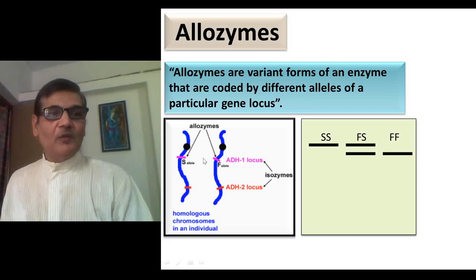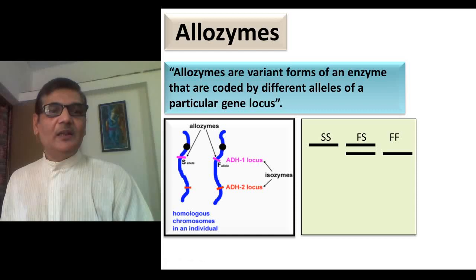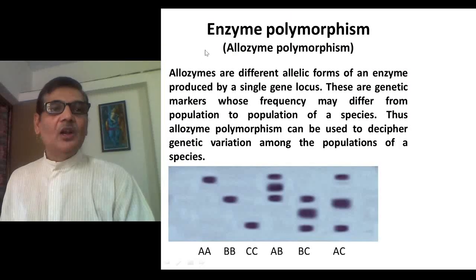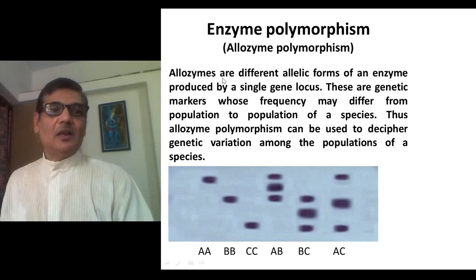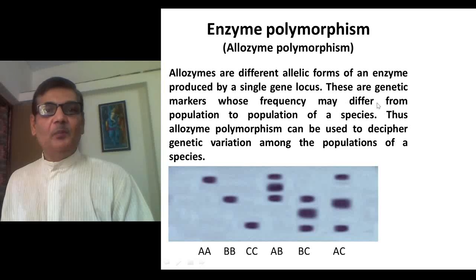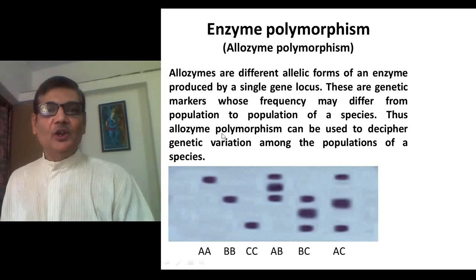Allozyme variations very much help to know the allelic frequency of that specific enzyme in different populations, and that can be used to study genetic polymorphism at the level of protein. This enzyme polymorphism, also referred to as protein polymorphism, is known as allozyme polymorphism. Allozymes are different allelic forms of an enzyme produced by a single gene locus and are genetic markers whose frequency may differ from population to population of a species. Thus, allozyme polymorphism can be used to decipher genetic variation among populations of a species.